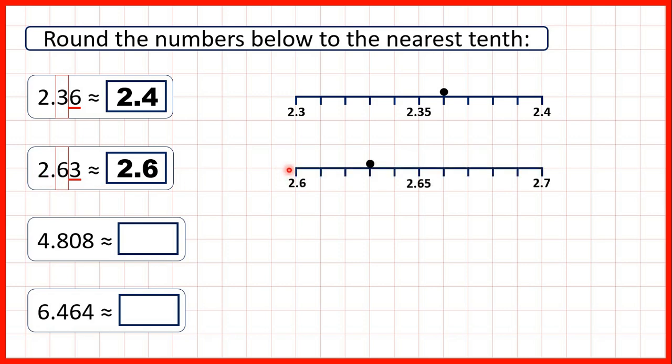And on a number line we can see that 2.63 is between the tenths 2.6 and 2.7 but because it's closer to 2.6 that's what it rounds to.